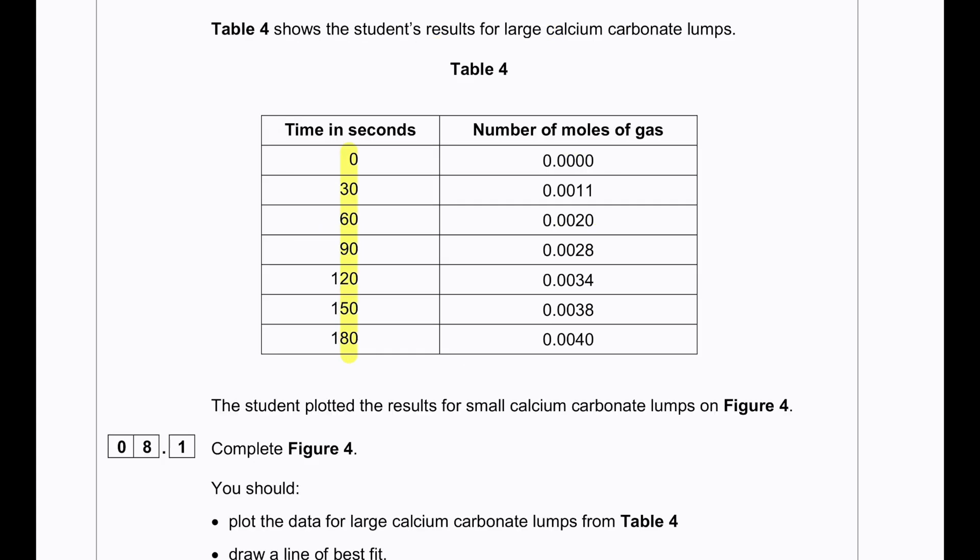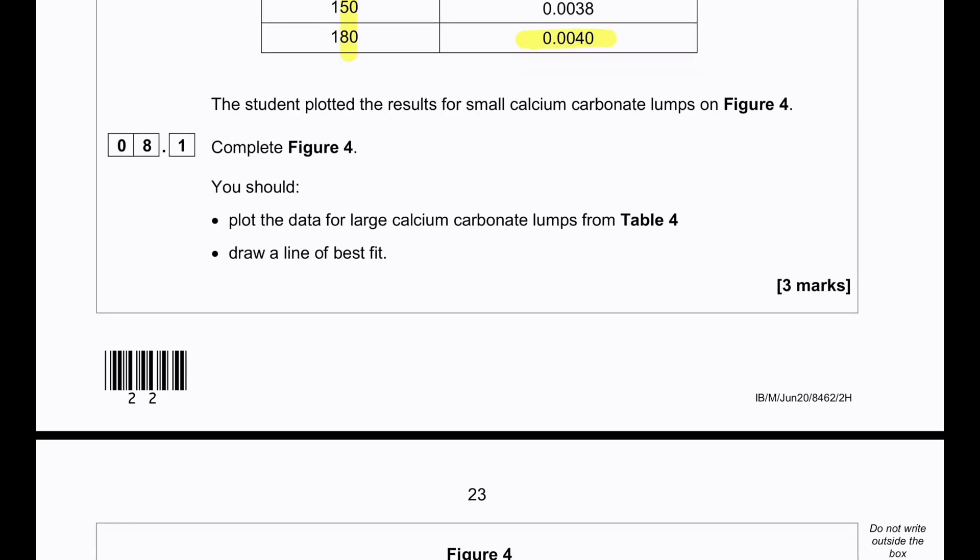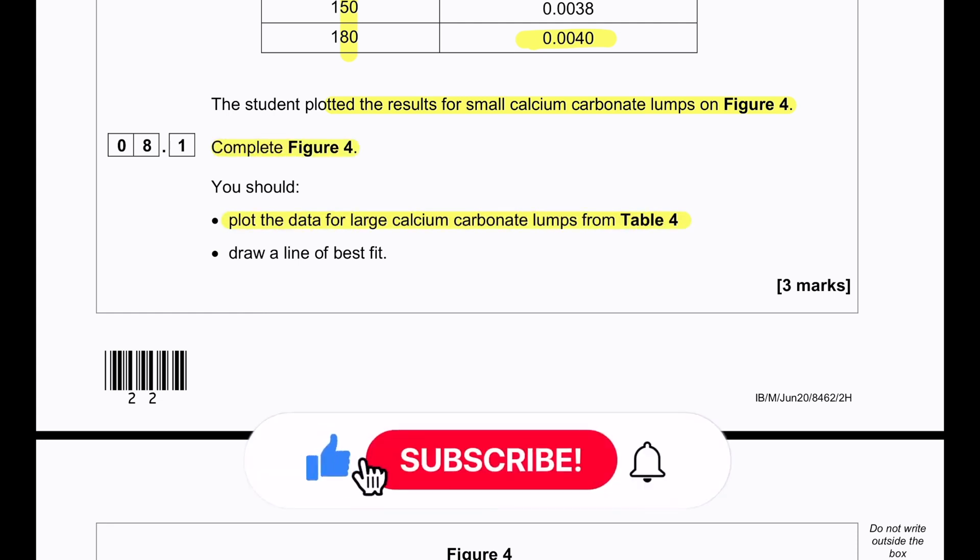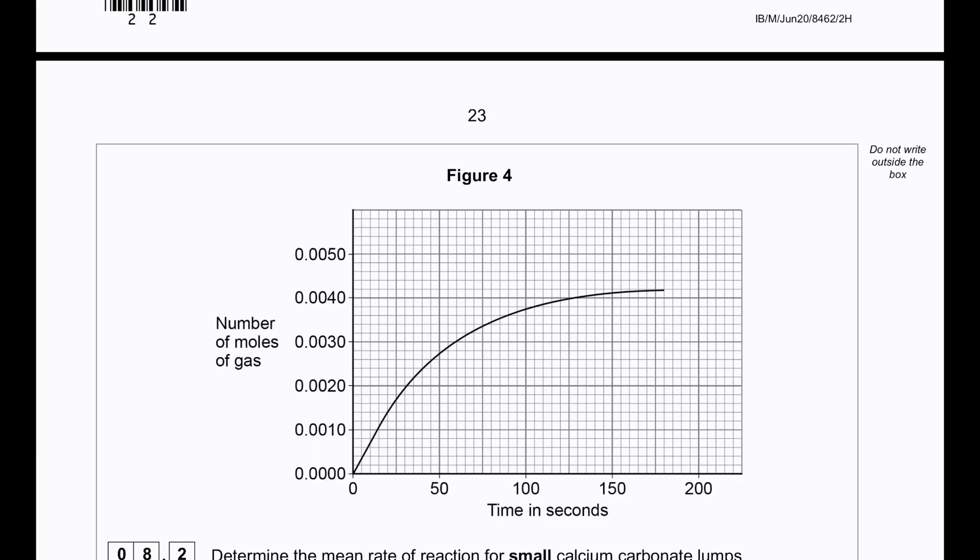The student calculated the number of moles of gas from each volume of gas measured. We can see time was measured up until 180 seconds and number of moles of gas up until 0.004. The student plotted the results for small calcium carbonate lumps on figure 4. Now they asked us to complete figure 4, plot the data for large calcium carbonate lumps from table 4 and draw a line of best fit. Because the maximum amount produced is 0.0040, so we will just extend the line.